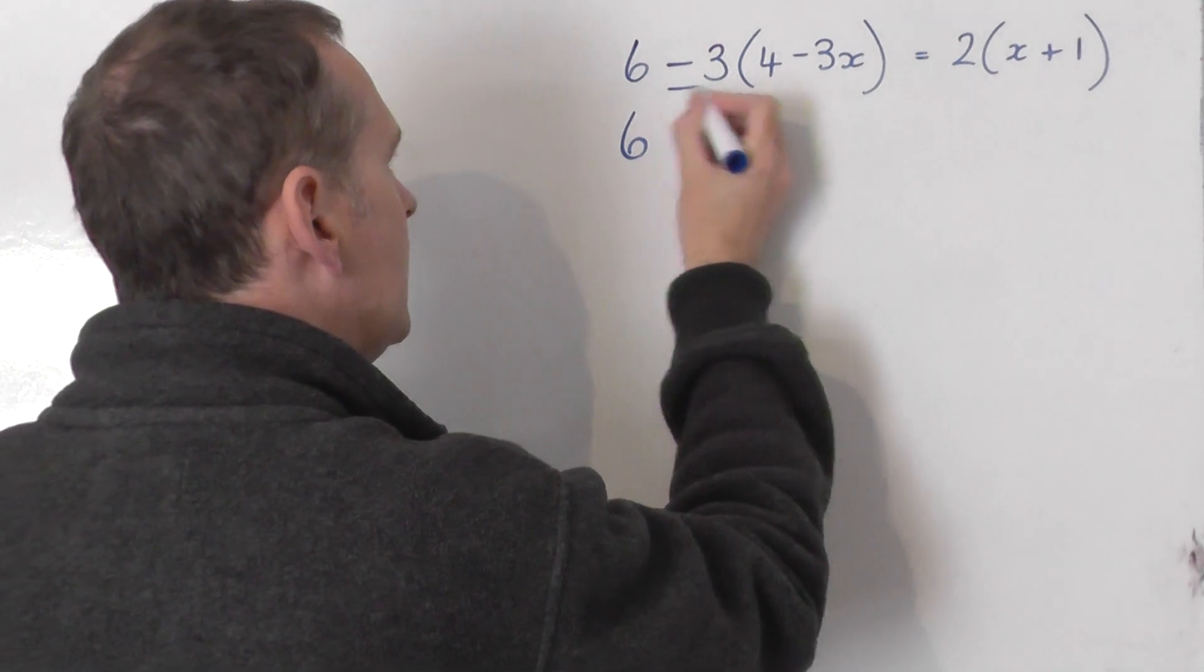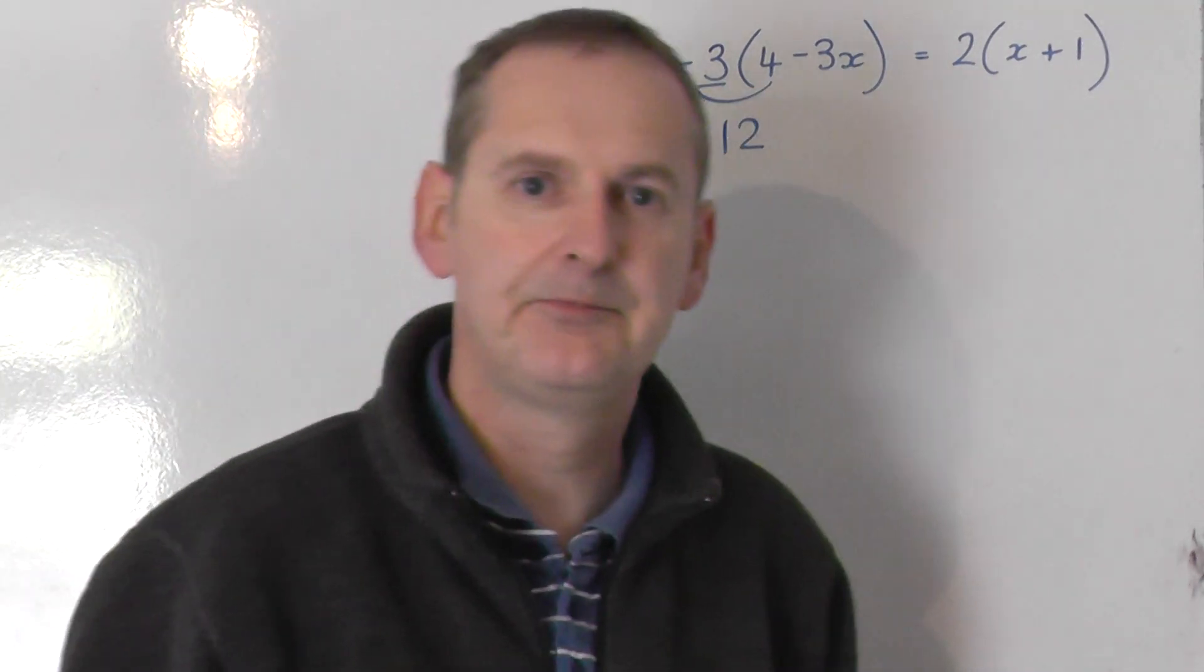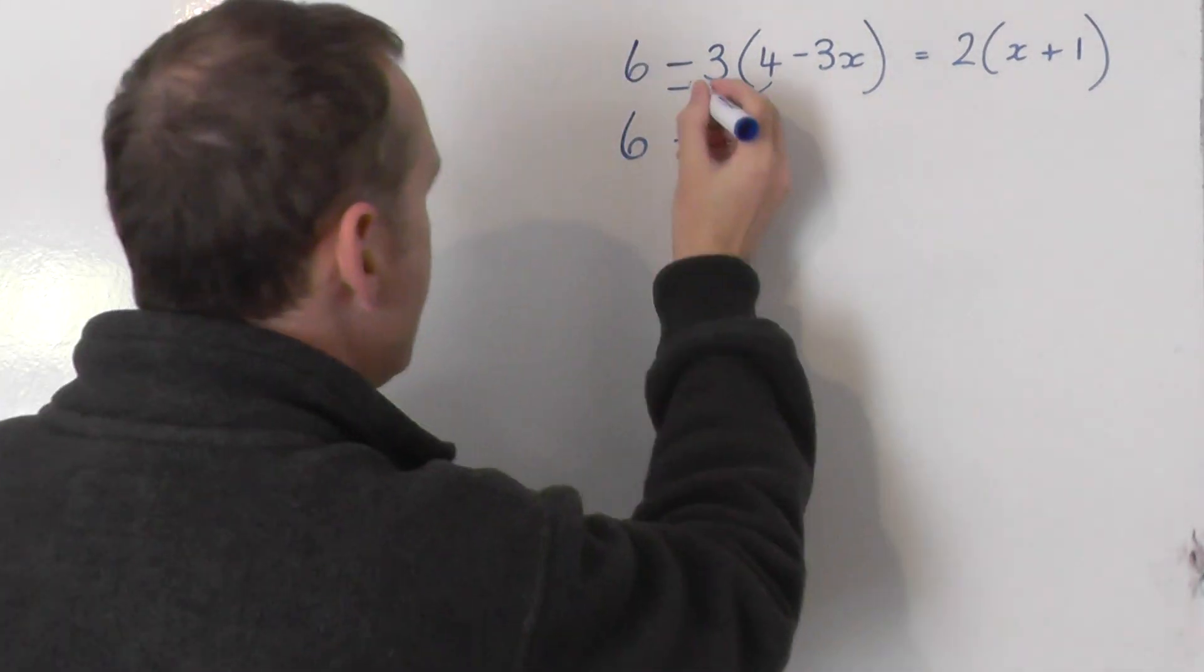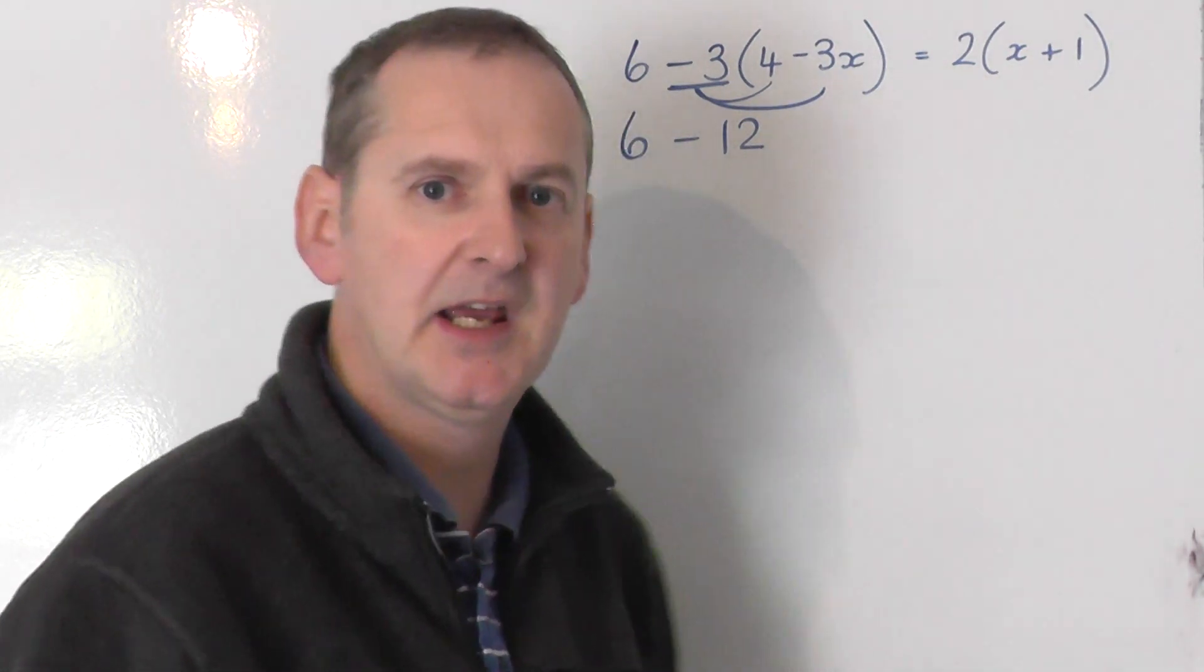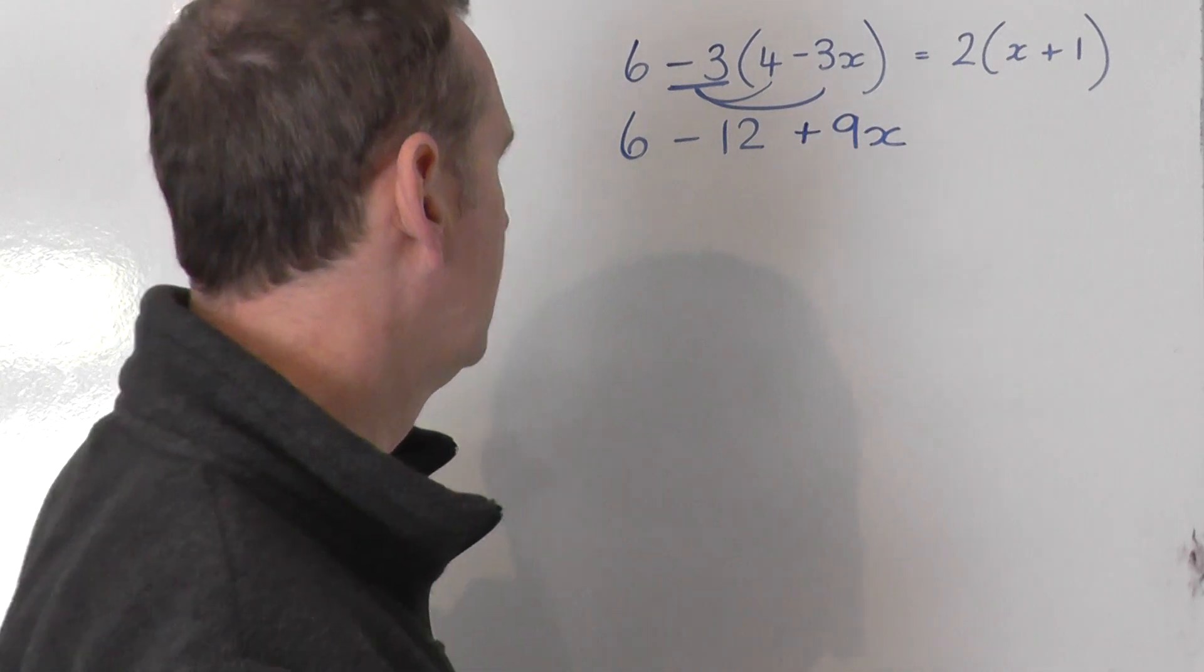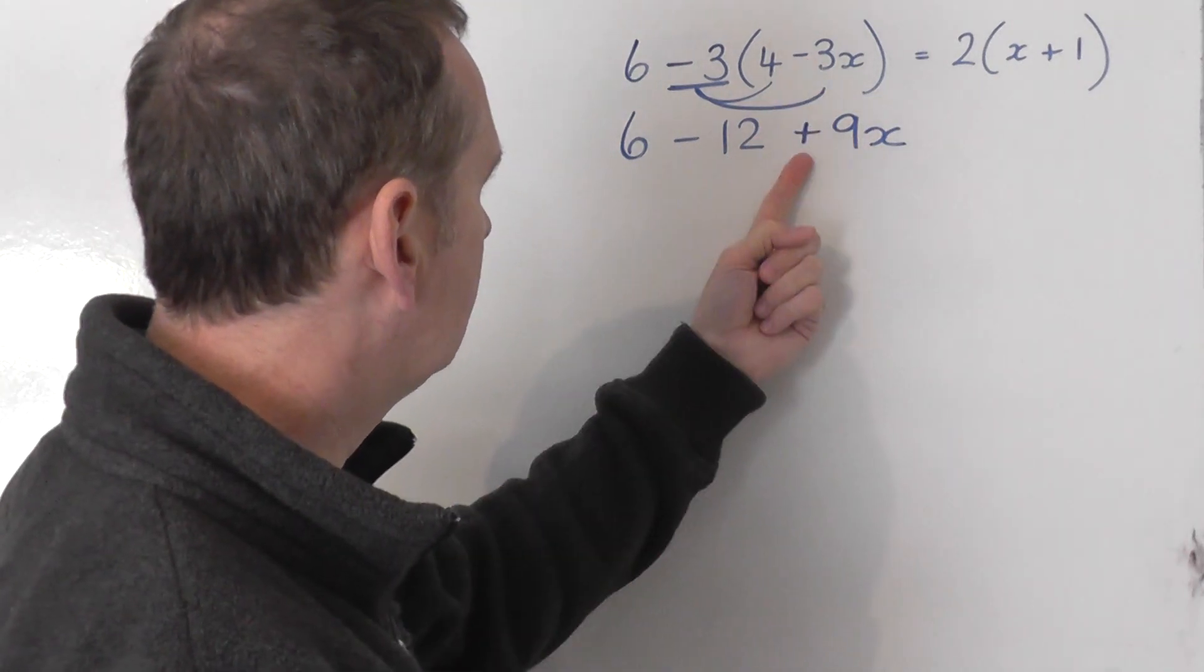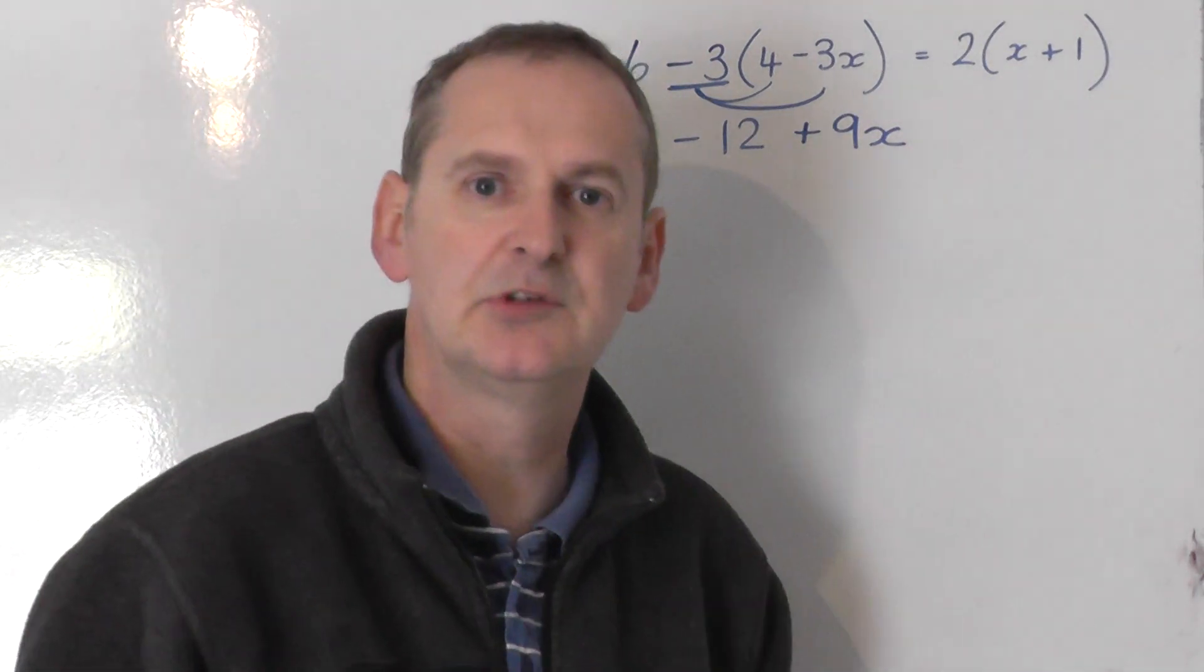So we say negative 3 times 4 is negative 12. We then say negative 3 multiplied by negative 3x. A negative times a negative is a positive, so you get plus 9x. Notice you've got a minus in the bracket but you've got a positive when you expand it out because of the negative in front of the bracket.